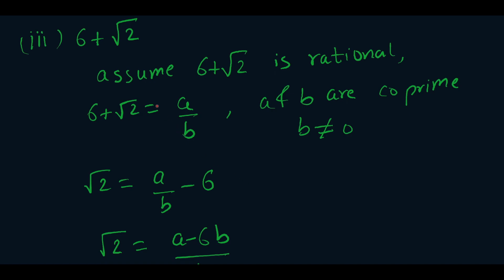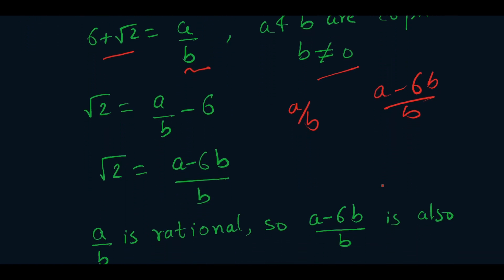Now our third and last question is to prove that 6 plus root 2 is an irrational number. We start by assuming that 6 plus root 2 is rational, so 6 plus root 2 equals a by b, where a and b are co-prime and b is not equal to 0. Therefore, root 2 is equal to a by b minus 6, which gives us a minus 6b over b.